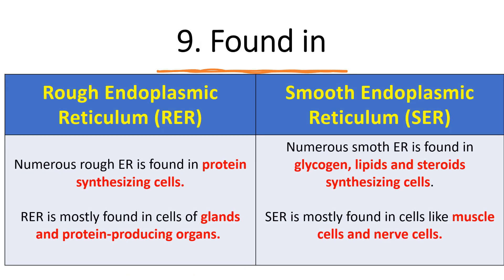Regarding their presence: rough endoplasmic reticulum is found mainly in protein-synthesizing cells. Cells that synthesize more proteins will have more rough ER, so it is mainly present in different glands because they secrete proteins and protein-associated compounds. Smooth endoplasmic reticulum is found in glycogen, lipid, and steroid-synthesizing cells such as muscle cells and nerve cells.